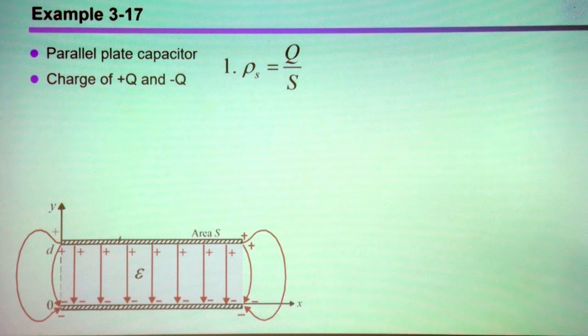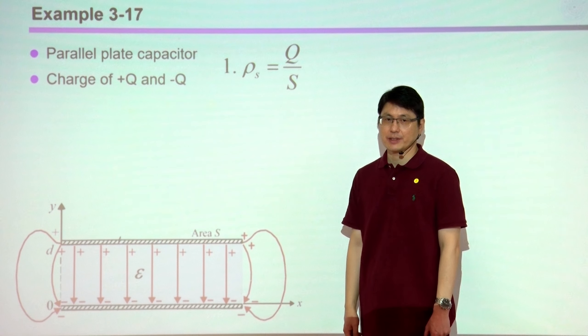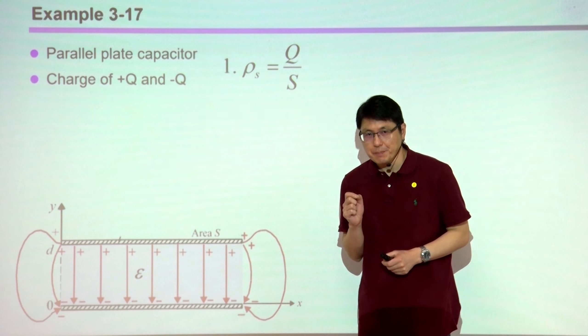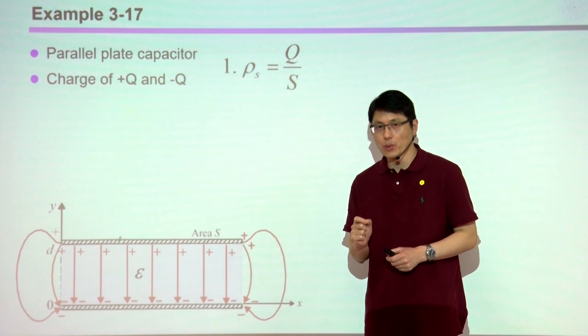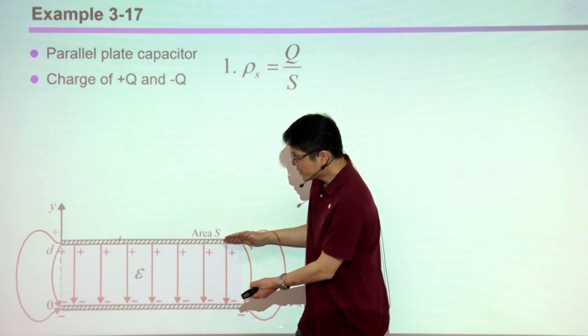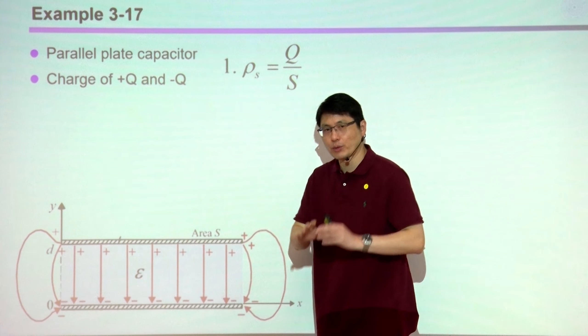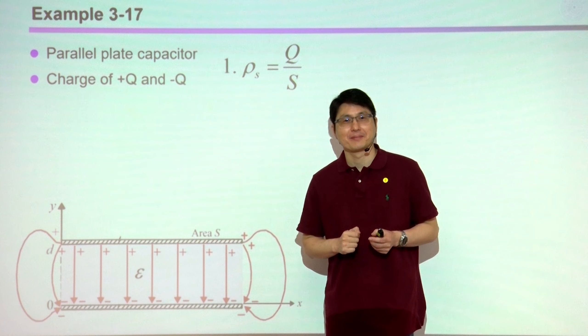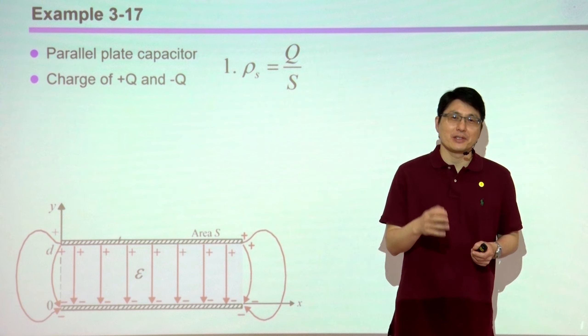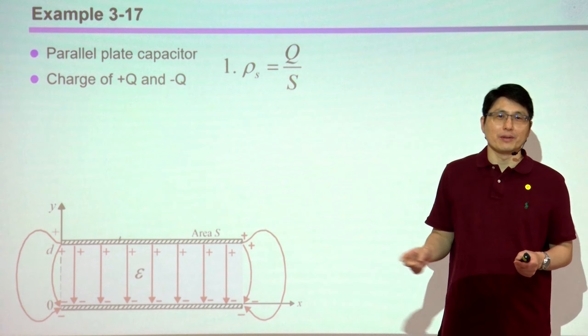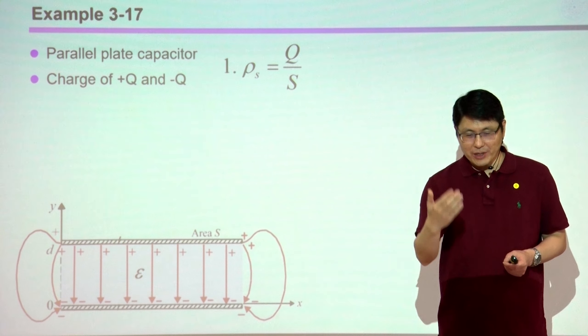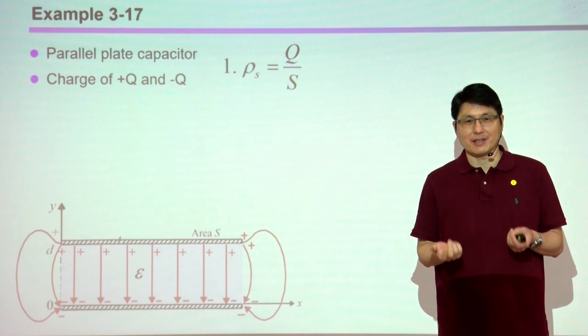The first case we're going to analyze is the two parallel plane capacitor. In this derivation, the assumptions are always made to assume these two plates are very big. If the two plates are not really big, then you don't have an easy answer. But what does that mean?